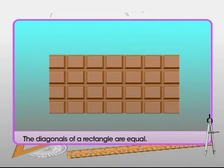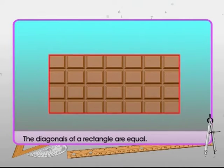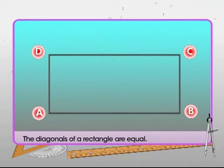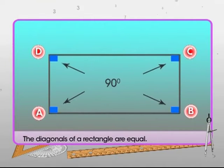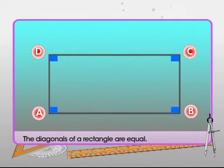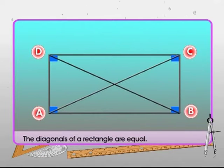You've seen a chocolate bar — usually it's in the shape of a rectangle. A rectangle is a type of parallelogram with all its angles as right angles. A rectangle also has its diagonals equal in length.